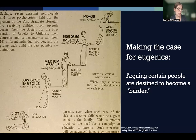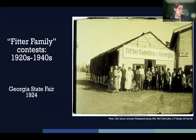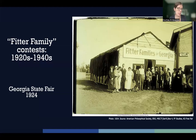Part of the goal of eugenicists was to show that genetically inferior people would become a burden to society. Various states and organizations then promoted positive eugenics by encouraging people who were deemed superior to have as many children as possible. The first Fitter Family Contest, which was based on Better Babies Contests, was held at the Kansas State Fair in 1920. Both types of contests took a deterministic view of genetics and assumed that there were good genes for characteristics like honesty, morality, and industriousness that could be passed on to children.